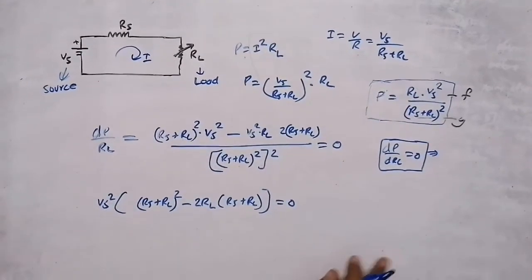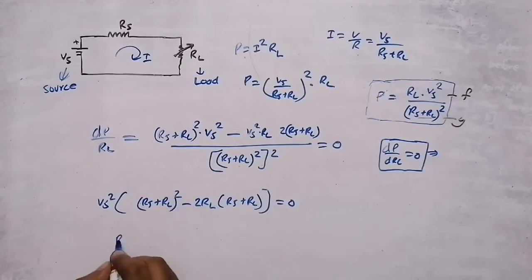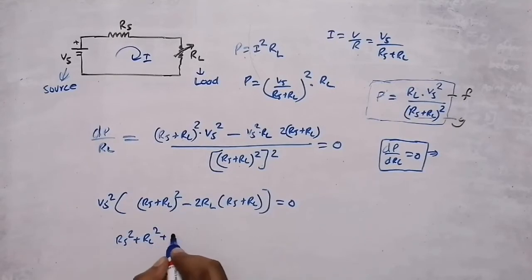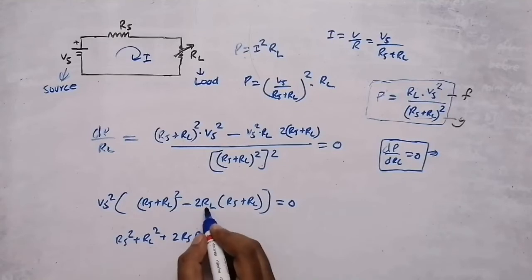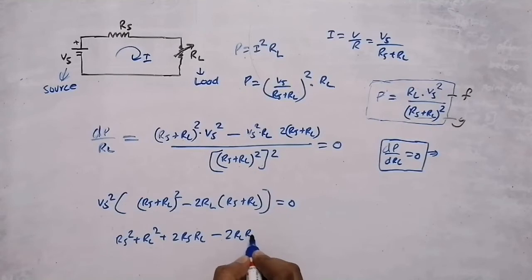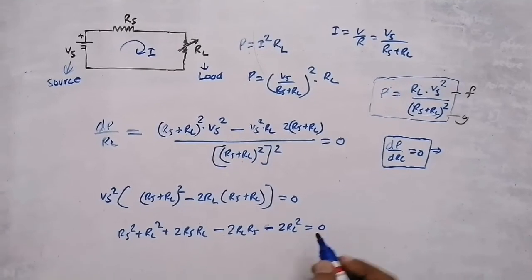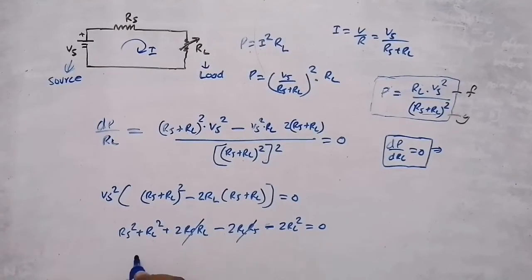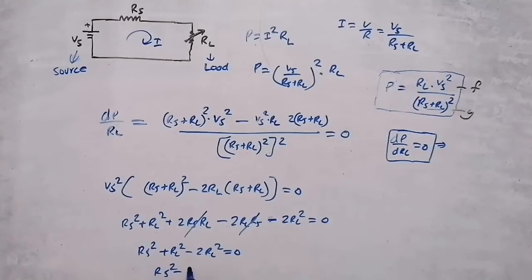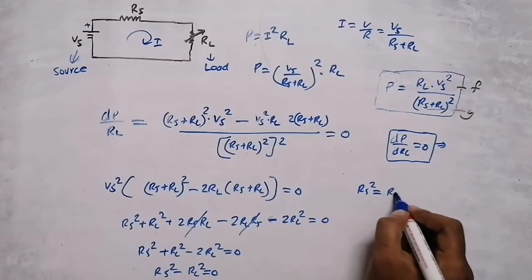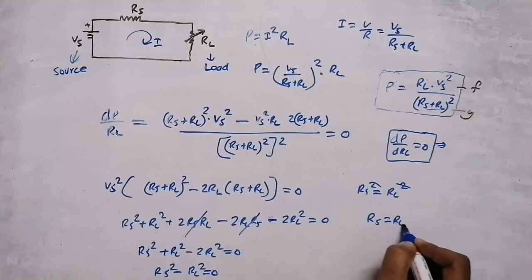Opening the second bracket: 2Rl·Rs plus, wait — it will be minus, since minus times plus gives minus 2Rl·Rs, and minus 2Rl into Rl gives minus Rl squared, equals 0. The 2Rs·Rl terms cancel, leaving Rs squared plus Rl squared minus 2Rl squared equals 0, which gives Rs squared minus Rl squared equals 0, so Rs squared equals Rl squared. Cancelling the squares: Rs equals Rl.